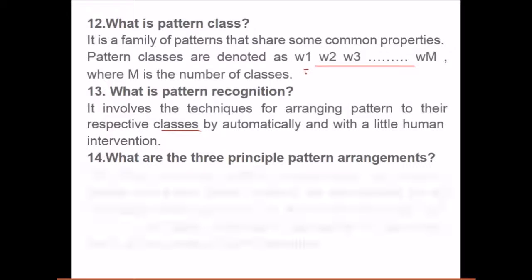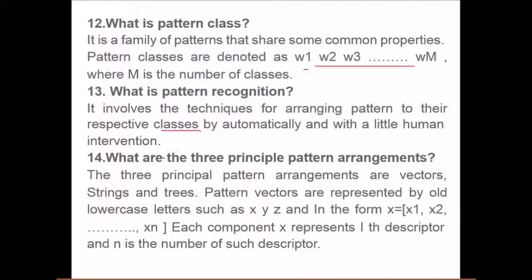What are the three principal pattern arrangements? The three principal pattern arrangements are vectors, strings, and trees. Pattern vectors are represented by lowercase letters such as x, y, z in this form: x equals [x1 to xn], and each component of x represents the i-th descriptor. In between, you can call it any i-th descriptor, where n is the number of such descriptors.